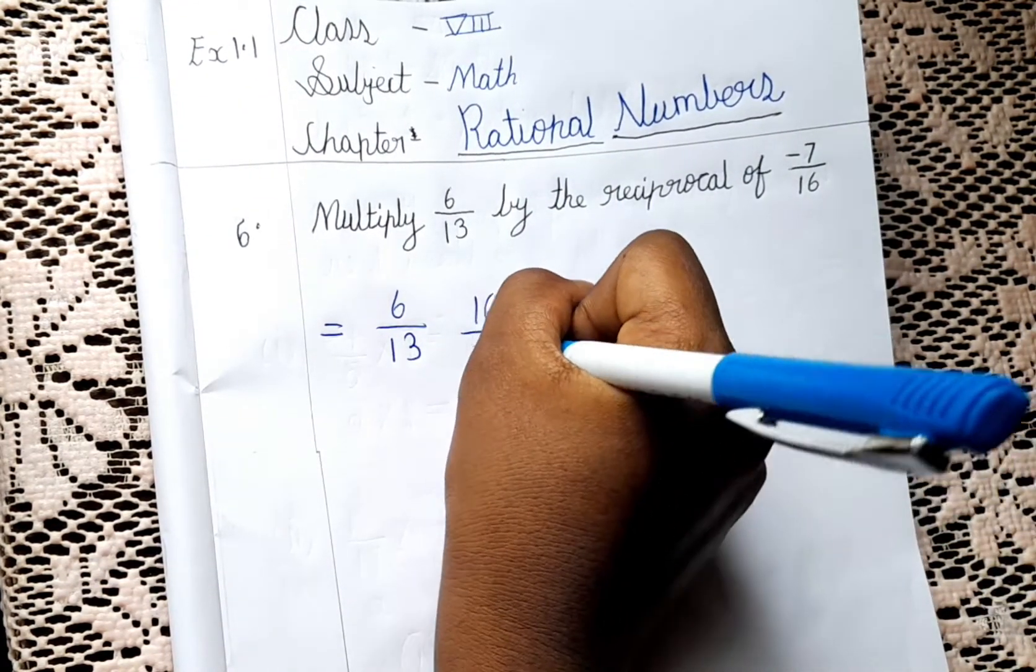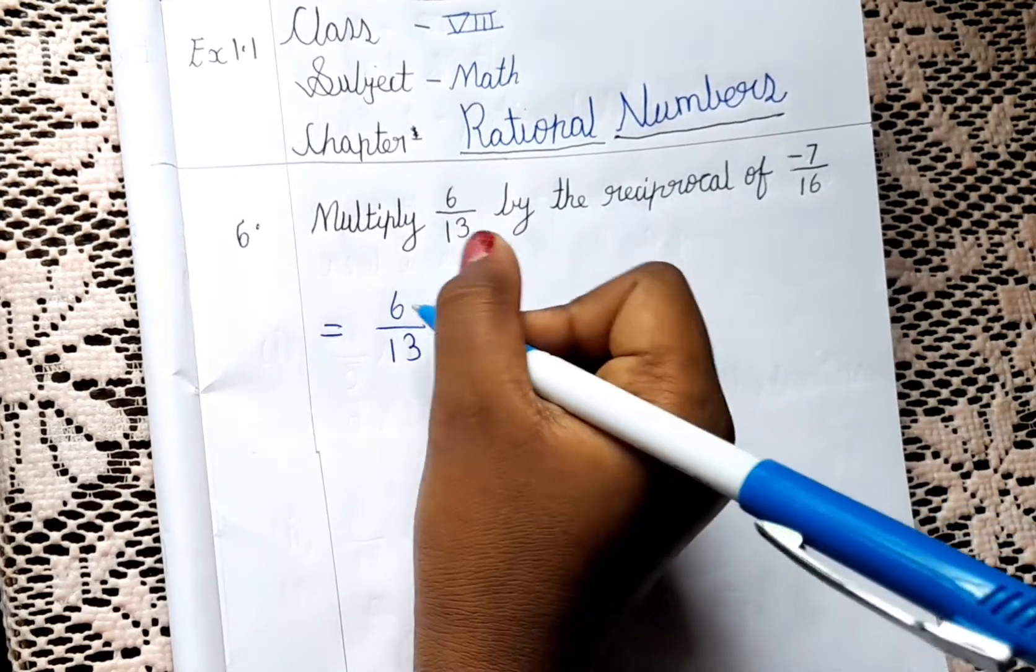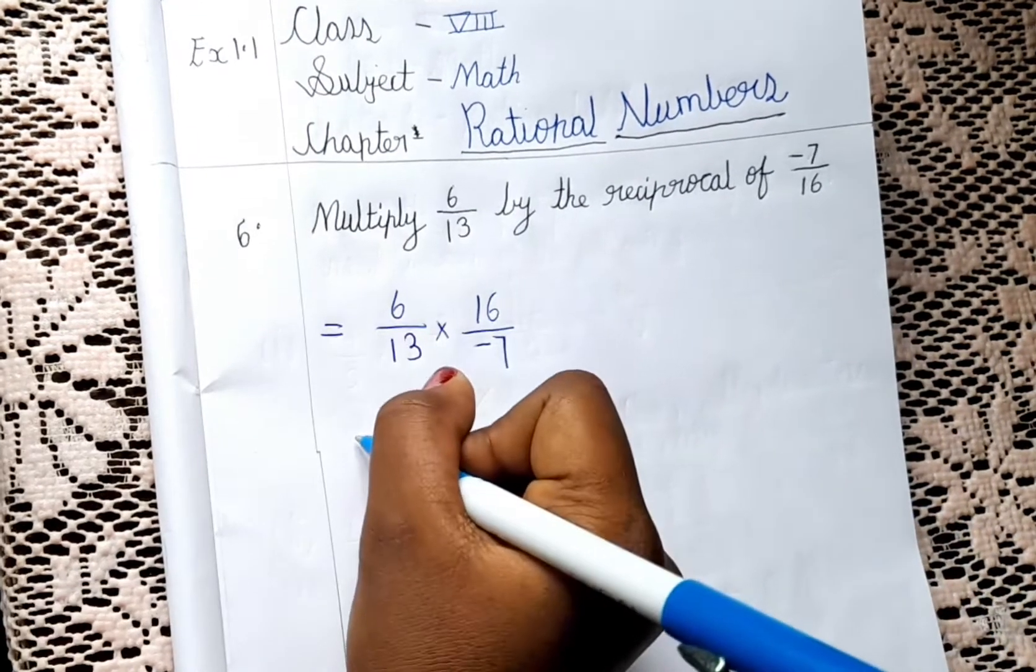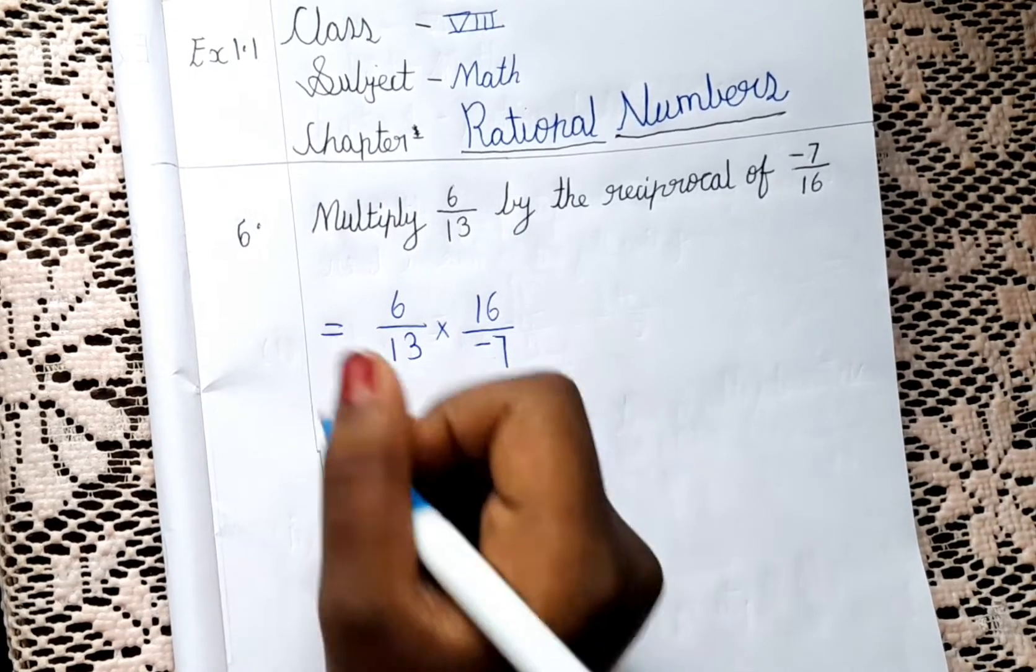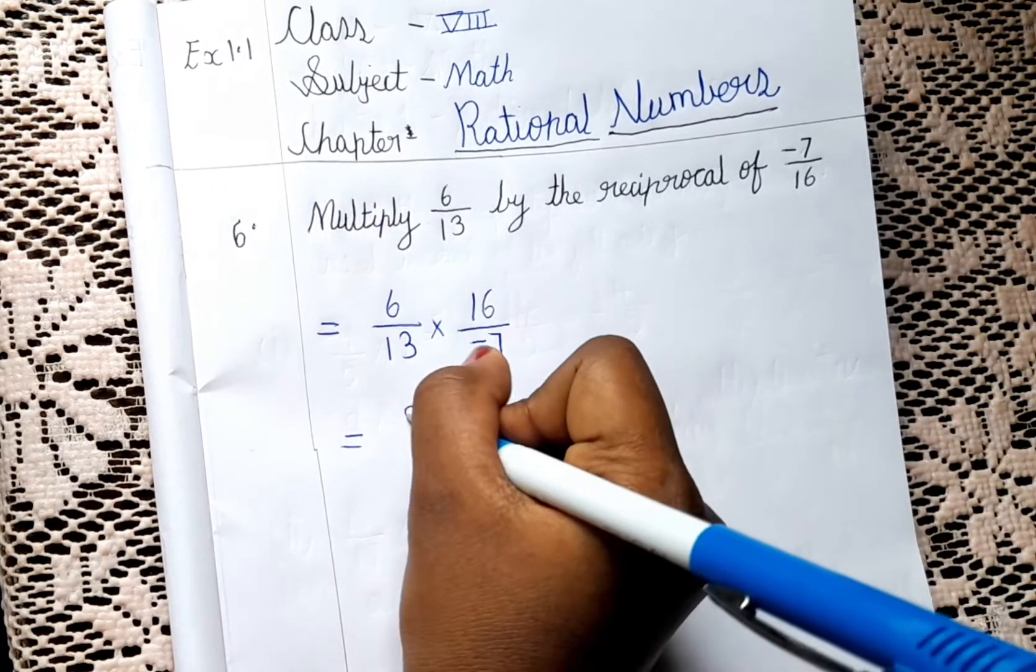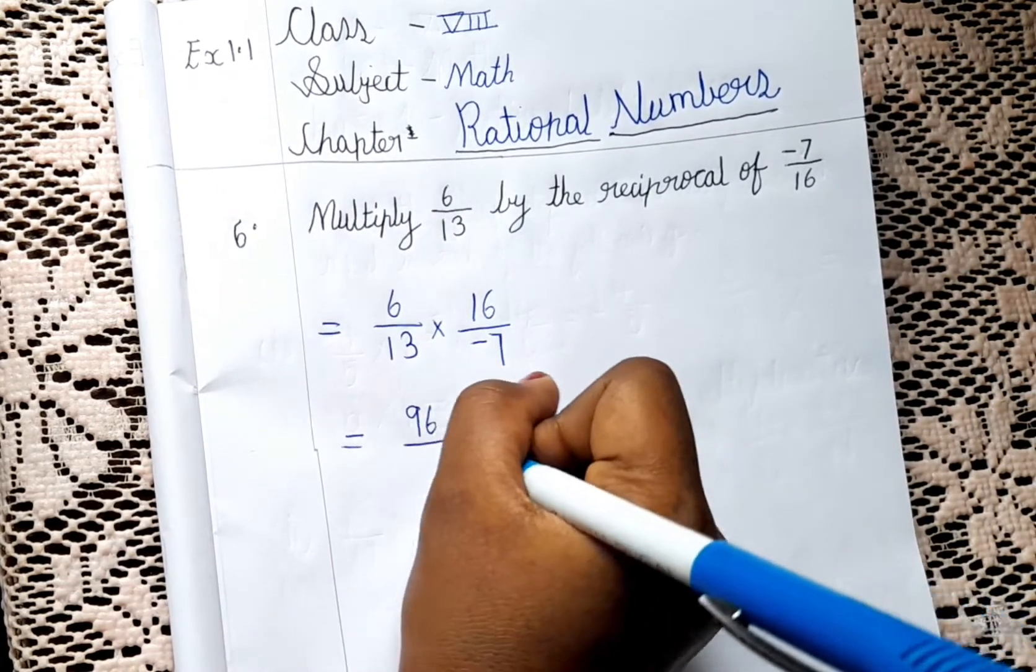So guys, now we have to multiply 6 into 16 and 13 into 7. So our answer is 96 by 91.